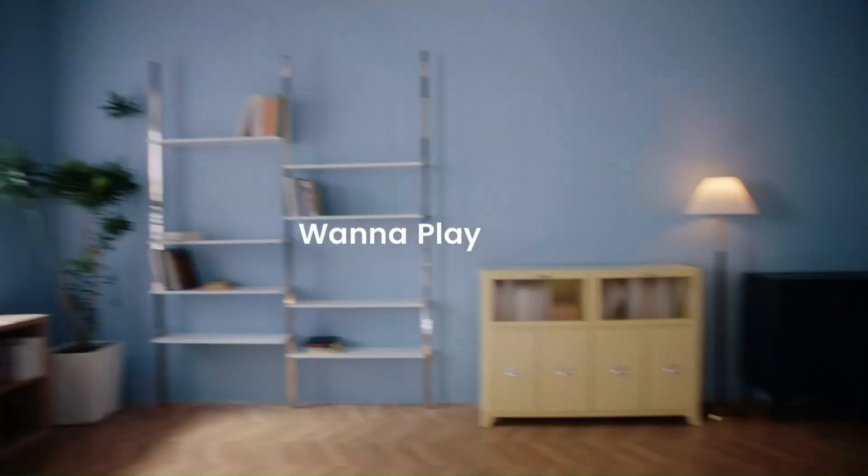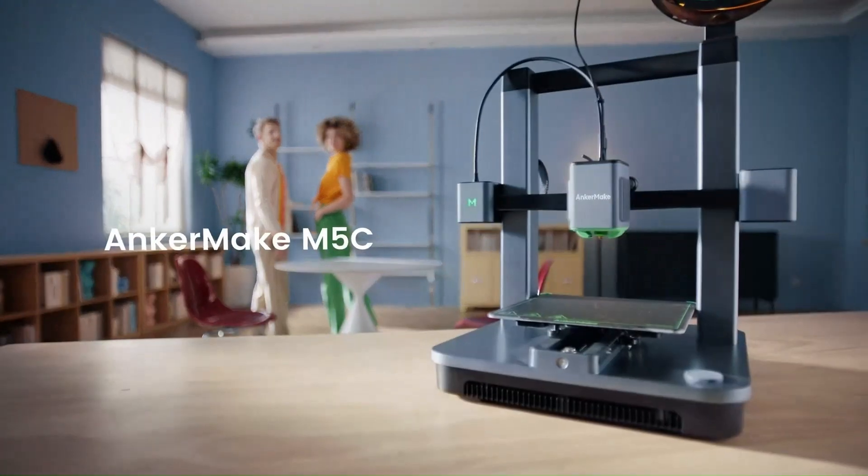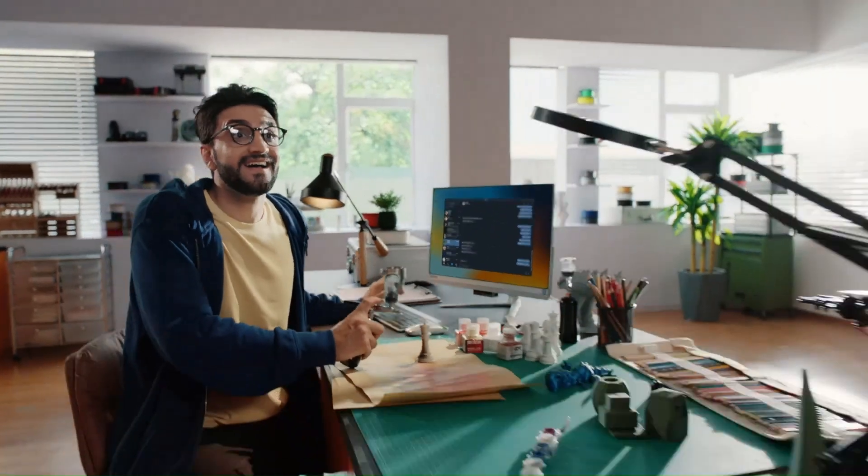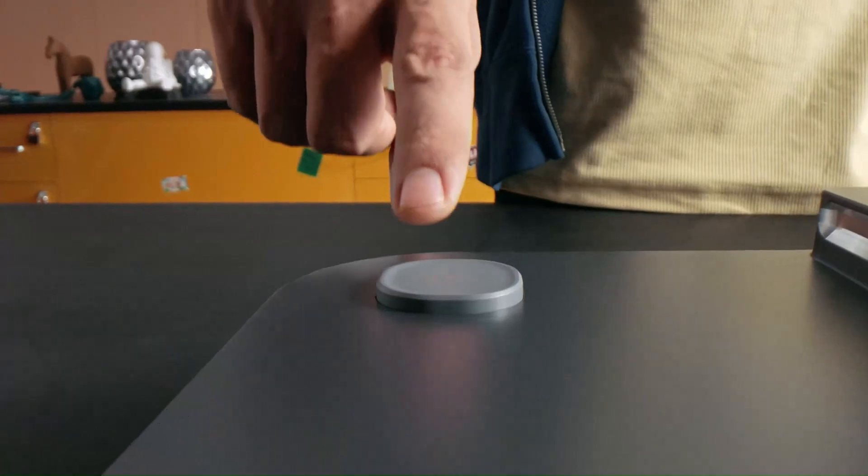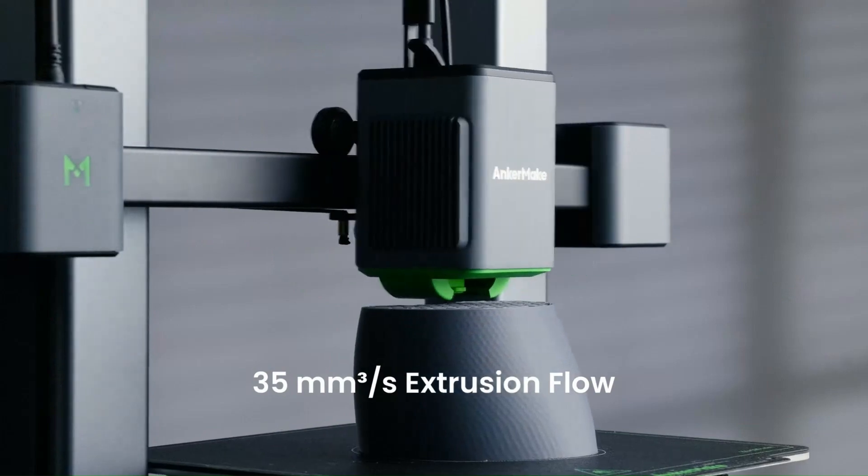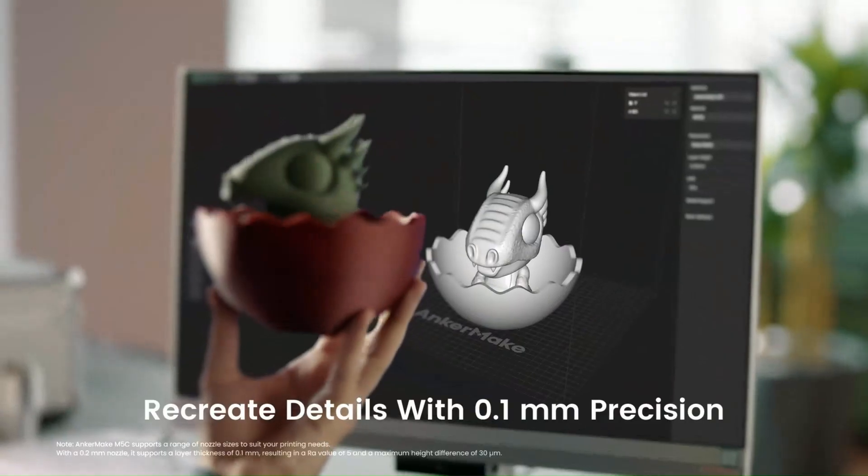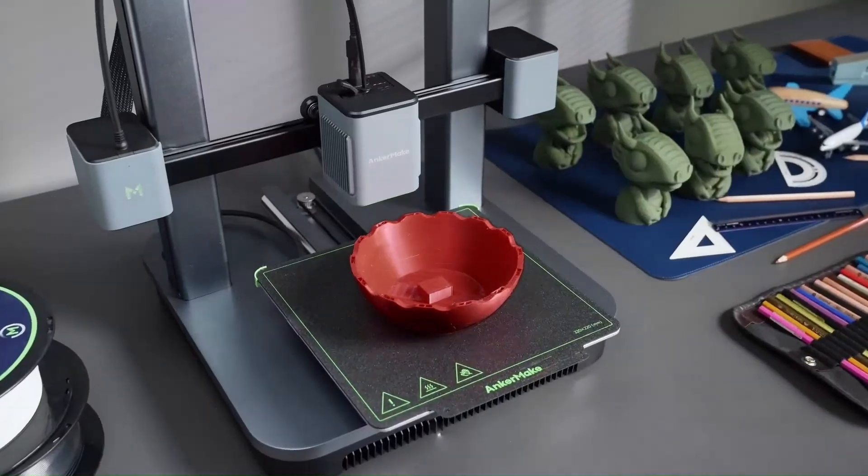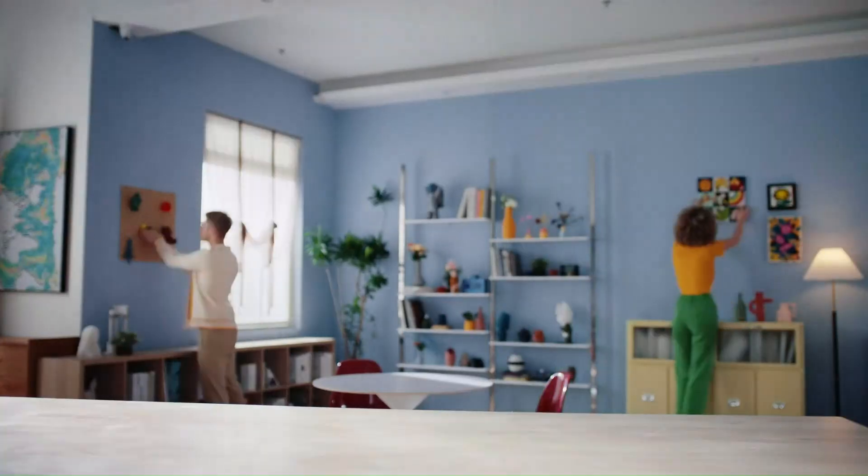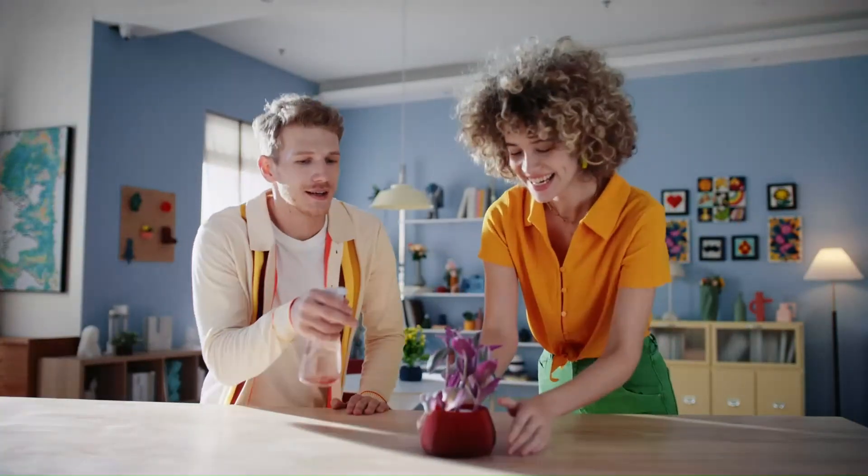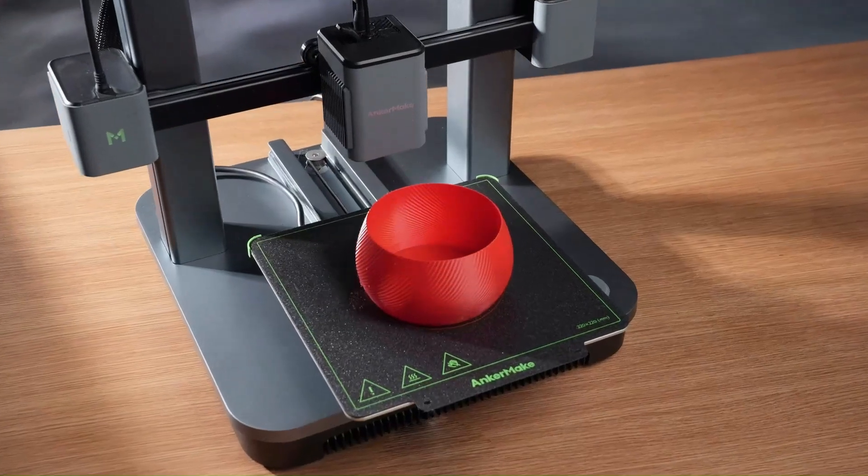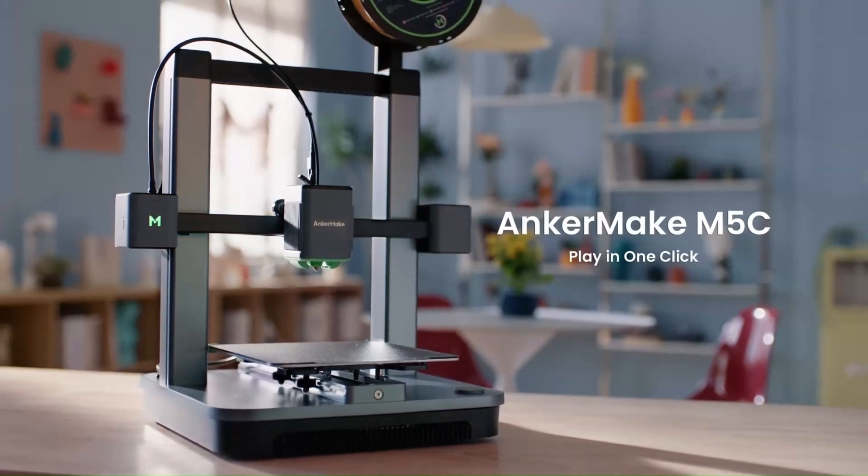Number 2: AnkerMake M5C 3D Printer. The AnkerMake M5C is a high-speed, user-friendly CoreXY 3D printer designed for both beginners and experienced makers. It features a direct-drive extruder, auto bed leveling, and an all-metal frame, ensuring smooth and accurate prints. With 500mm per second print speeds, it significantly reduces waiting times while maintaining good quality. One of its most notable features is one-tap printing via the AnkerMake app, which allows users to start prints remotely. The printer supports Wi-Fi and Bluetooth connectivity, eliminating the need for manual file transfers. Additionally, the PEI-coated flexible build plate makes print removal easy.